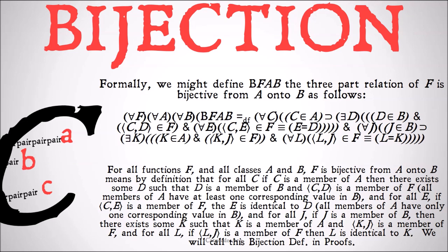All members of a have only one corresponding value in b. And for all j, if j is a member of b, then there exists some k such that k is a member of a and (k, j) is a member of f. And for all l, if (l, j) is a member of f, then l is identical to k. That's the same two rules, but for the other way around in the directions of the classes. We will call this the bijection definition in proofs.